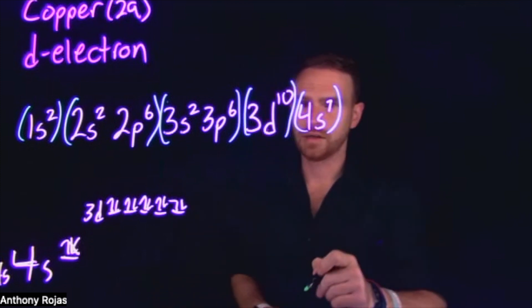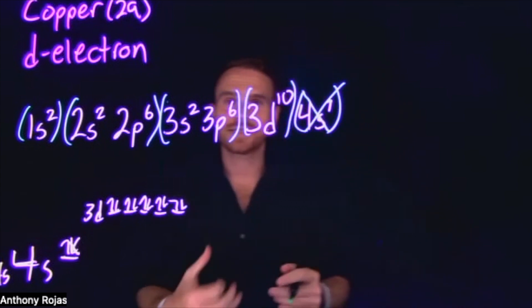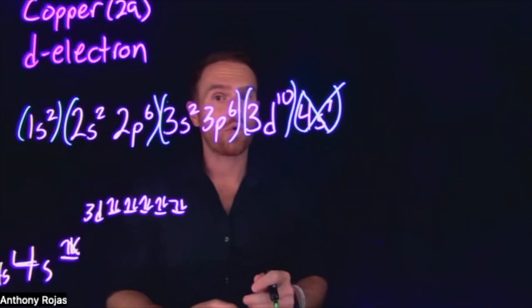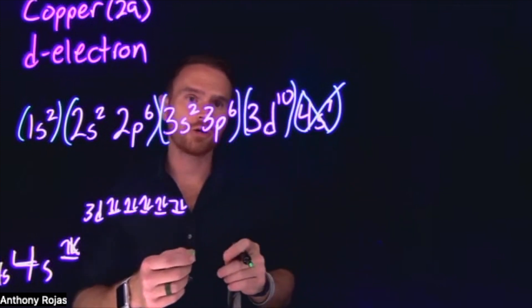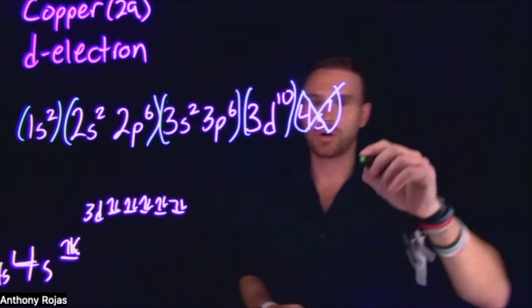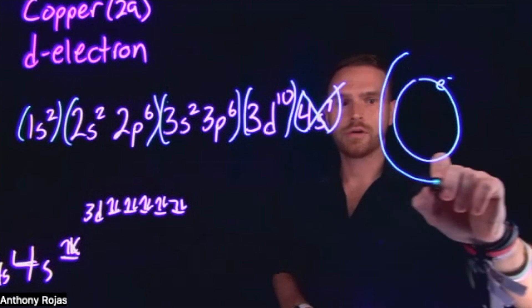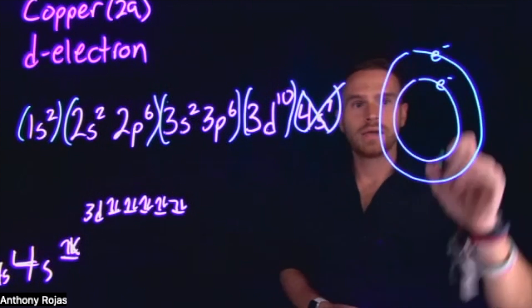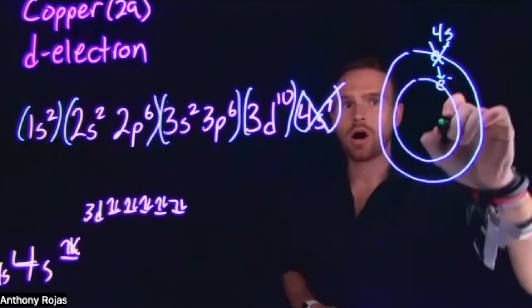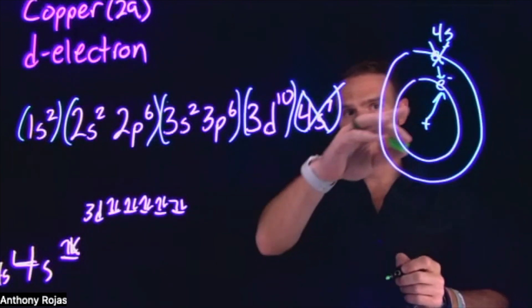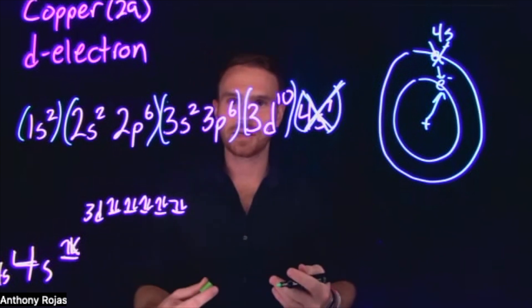Notably, we are not going to factor in the 4s electrons into our calculation. This is because they do not contribute any shielding preventing the 3d electrons from feeling the effective nuclear charge. Remember, the n=3 shell where the 3d electron is located is closer to the nucleus than where those 4s electrons are. So the 4s electron has no impact on what attraction the 3d electron feels between itself and the nucleus, and therefore doesn't factor into our calculation.